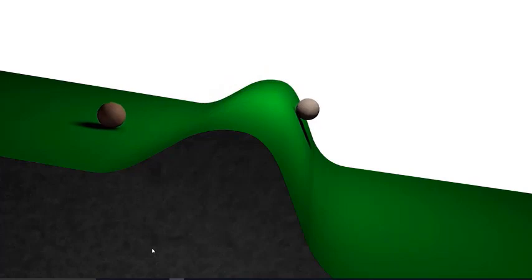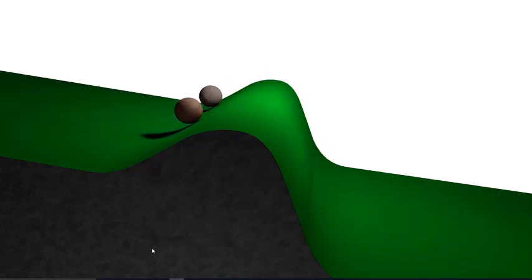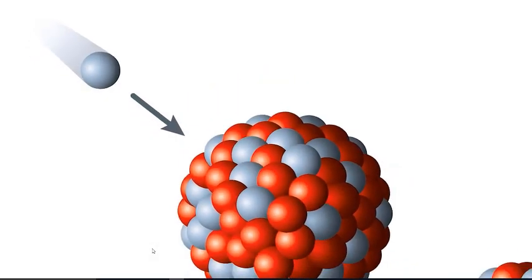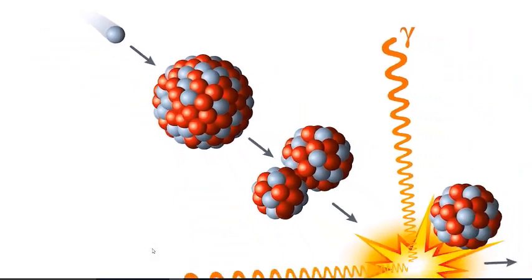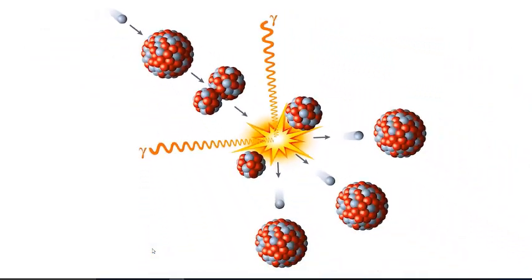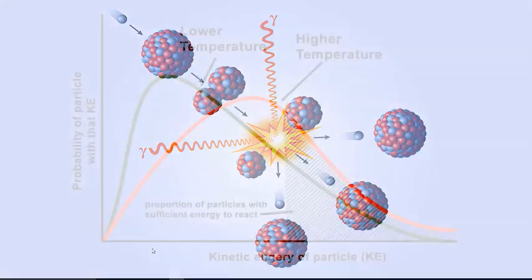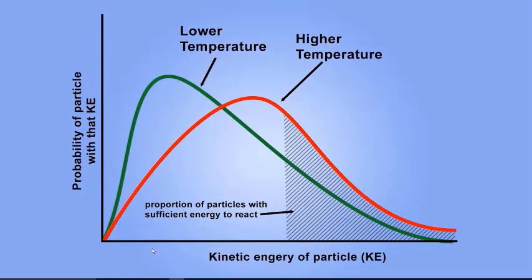Activation energy is the required energy needed for a reaction to occur. For example, in order for a large rock to roll down a hill, the person must first put in enough energy to get the rock over the bump. A chain reaction occurs once the product begins to form. If the concentration and/or temperature is great enough, it will increase the speed of the particles, which is directly related to the increase in collisions.